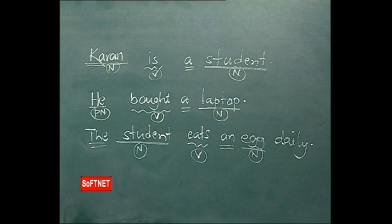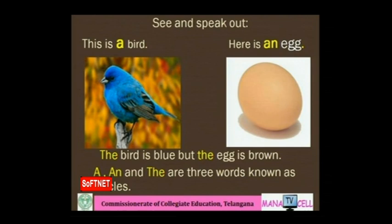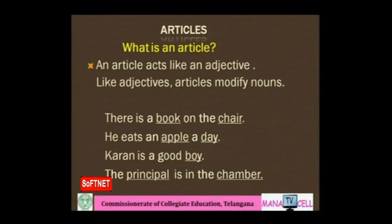Now look at the slide. This is a bird. Here is an egg. The bird is blue, but the egg is brown. A, an, and the are three words known as articles.